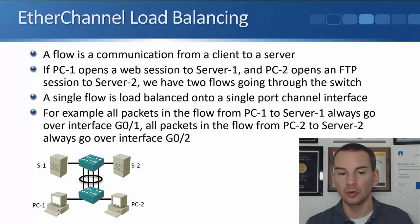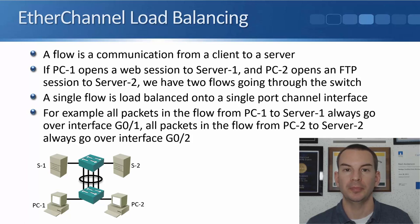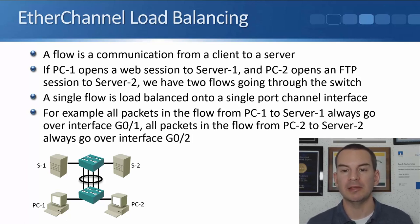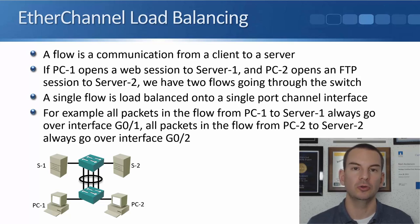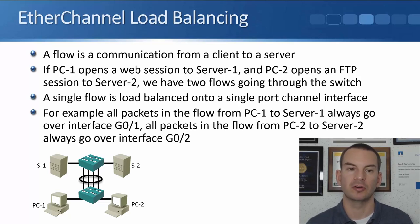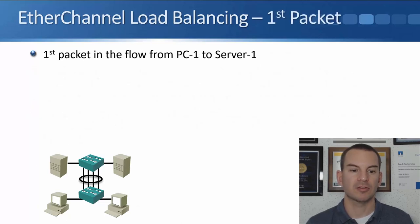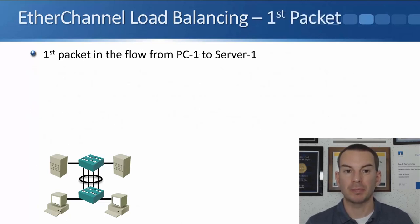With EtherChannel, a single flow is load balanced onto a single port channel interface. For example, all packets in the flow from PC1 to Server 1 always go over interface GigabitEthernet 0/1, and all packets in the flow from PC2 to Server 2 always go over interface GigabitEthernet 0/2.